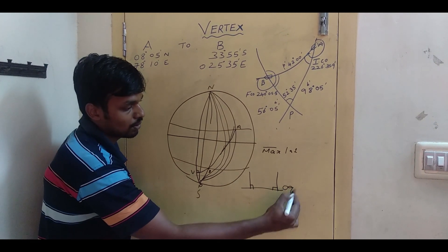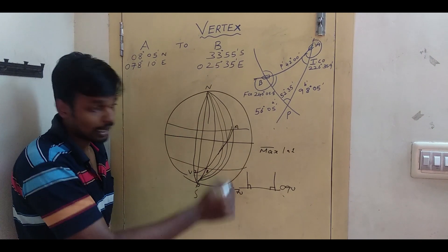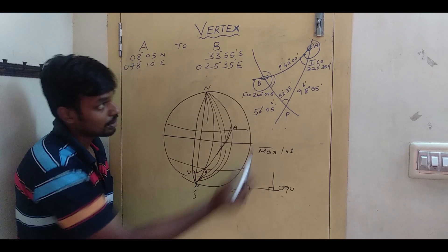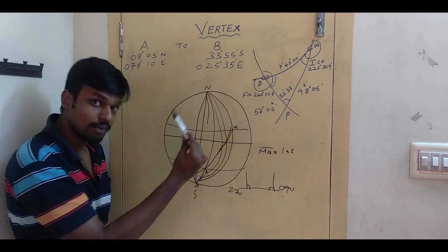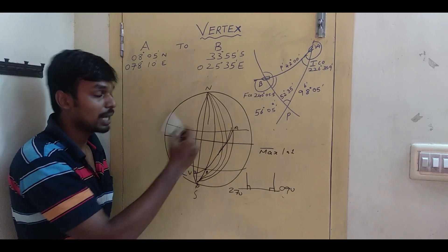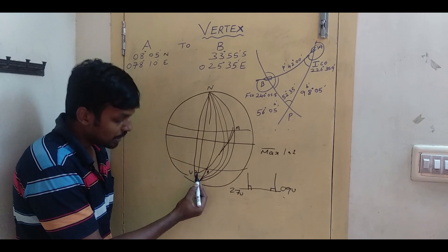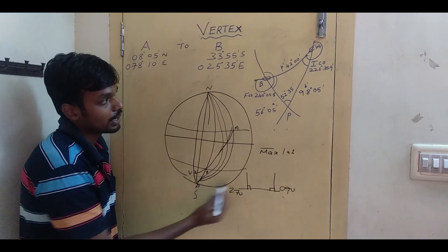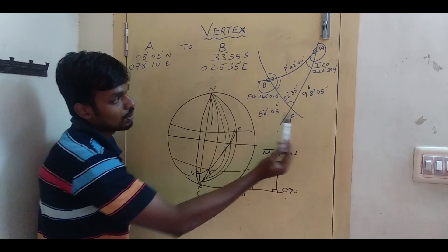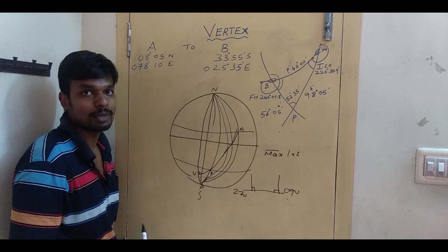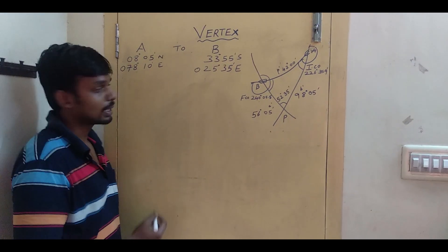Either the track will be easterly or westerly — 090° or 270° — so only at that course will the meridian cut at exactly a right angle. With initial course 226° and final course 240°, the vertex will be after B. For example, if the initial course is 240° and the final course is 280°, the vertex will be in the middle.